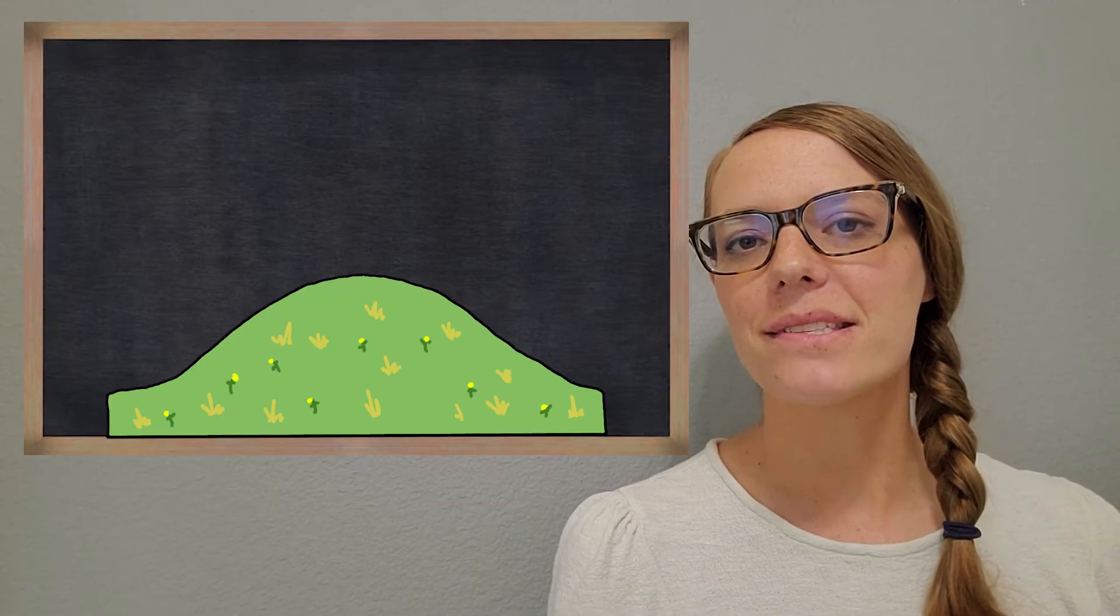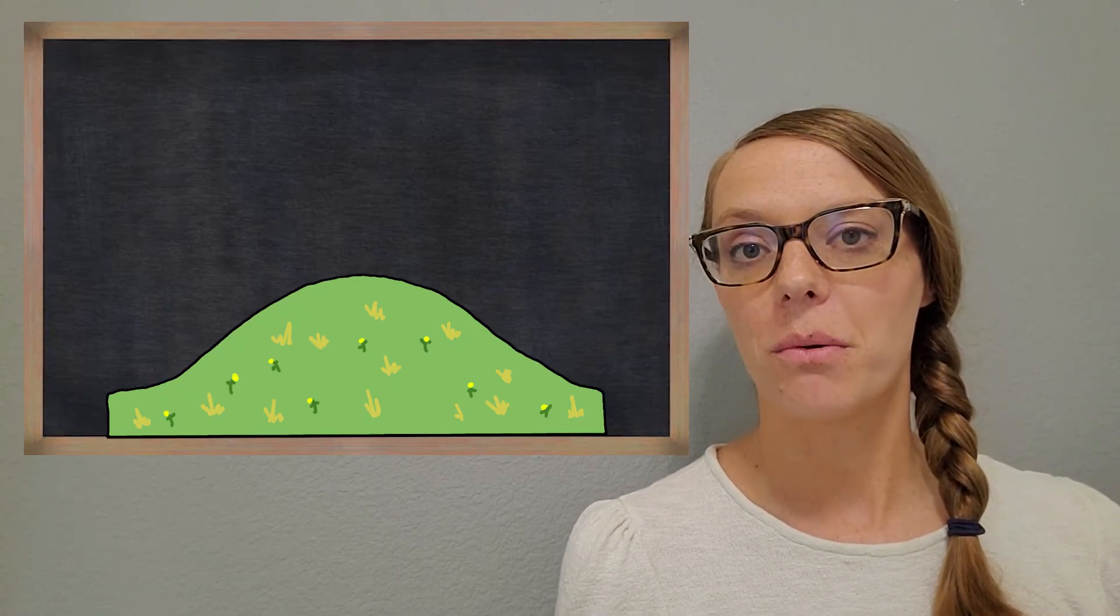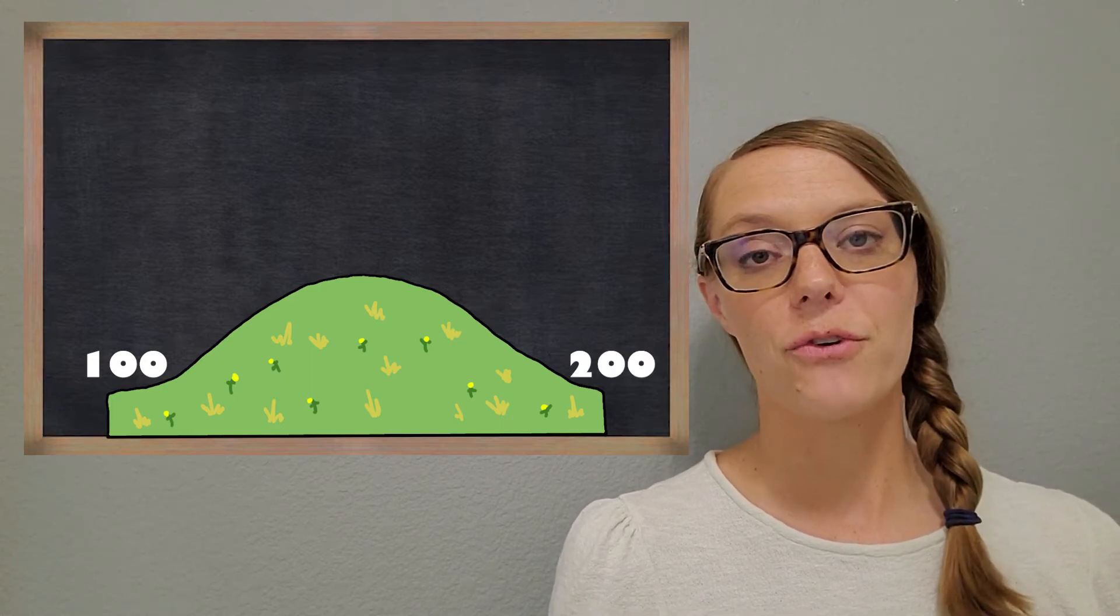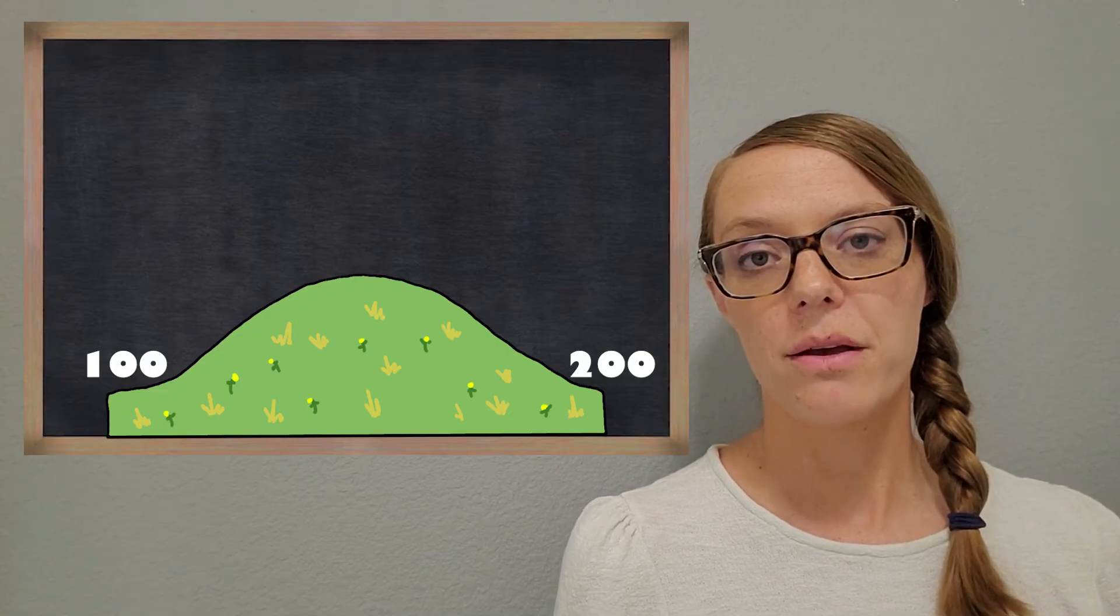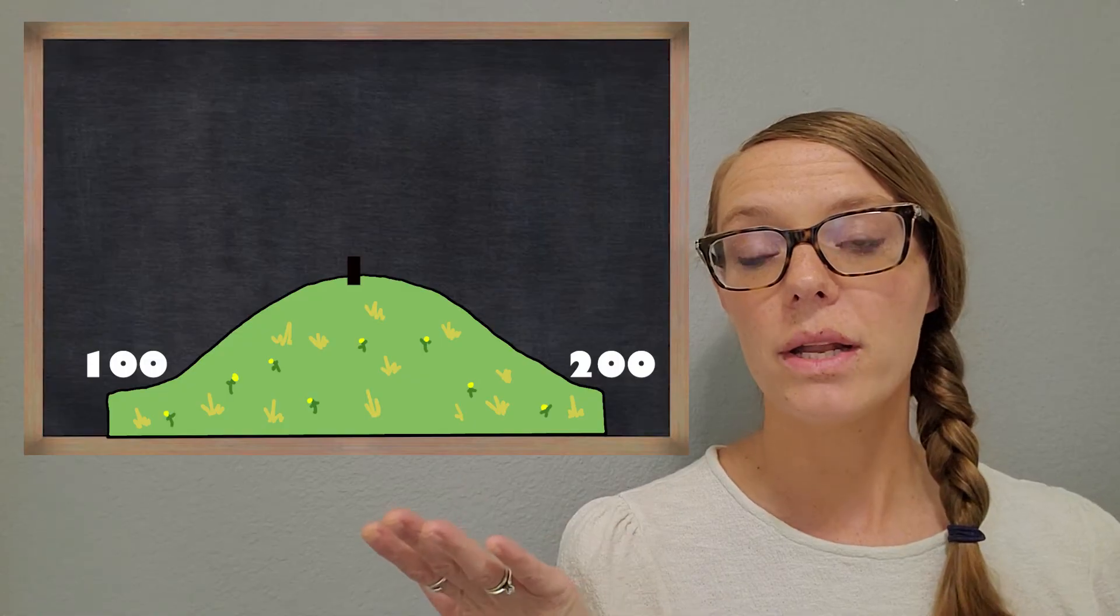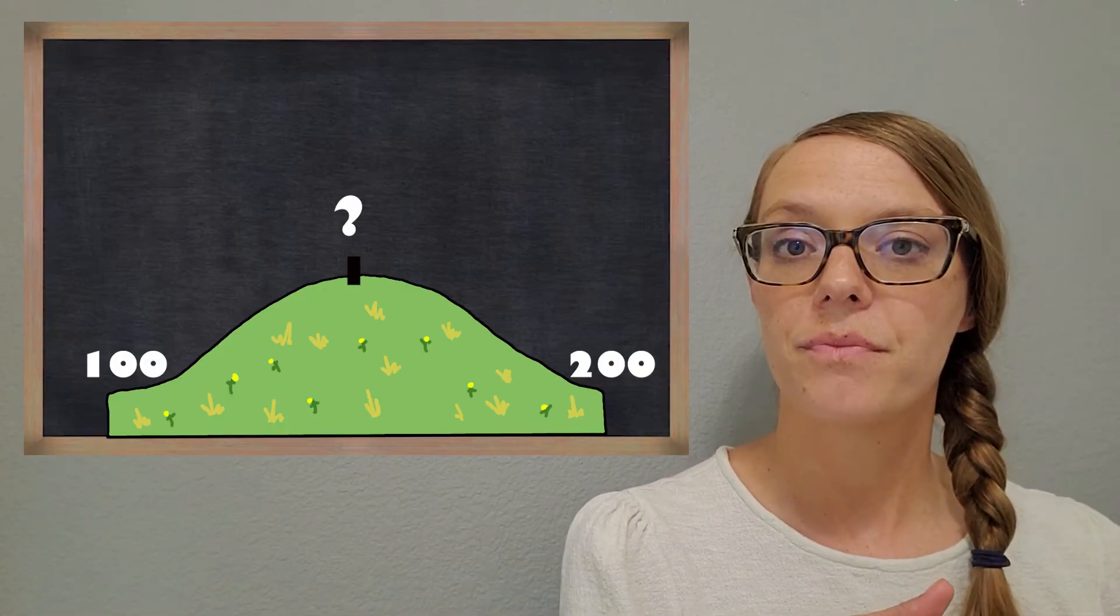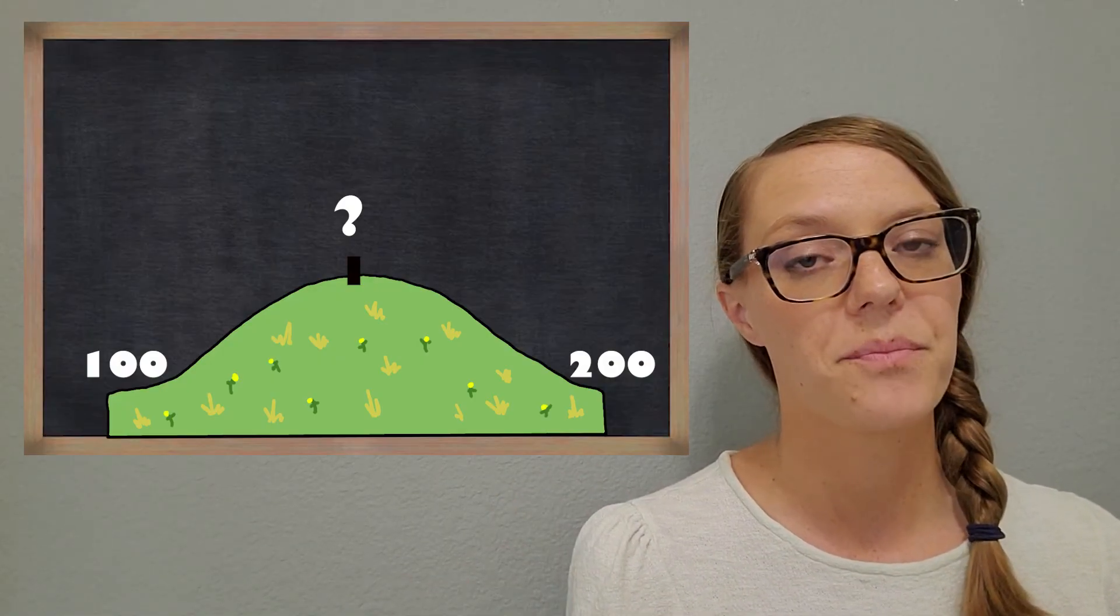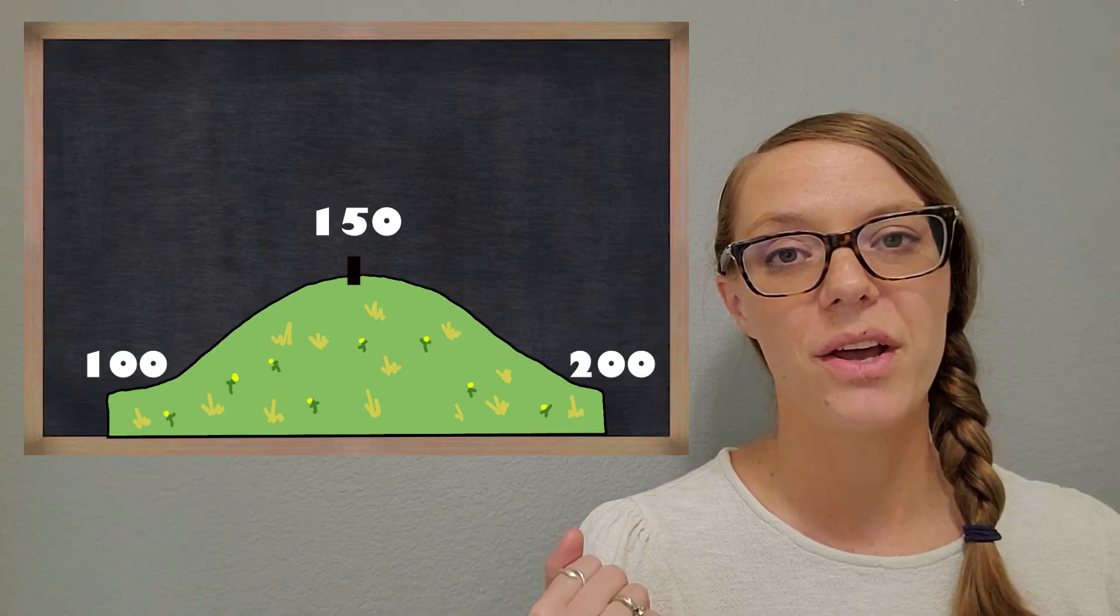Now let's look at another example with a little bit bigger numbers. So we're going to have a hill that goes from 100 to 200. So remember that first thing to always do before we think of a number to round is just to get that halfway point labeled. So what is halfway between 100 and 200? And remember that there's always going to be a five in there somewhere. You got it. It's 150.